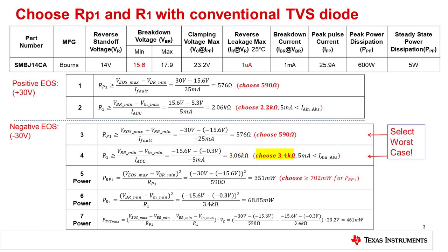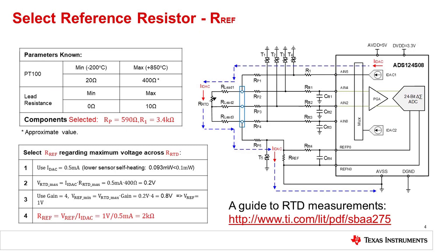Also, in any case where a standard resistor value is not found, we always round up for the most robust protection. In steps 5, 6, and 7, the worst case power dissipation of the resistors and TVS diode is calculated. The power dissipation for RP1 is 351 mW. A typical rule of thumb is to choose a power rating of at least twice the continuous power dissipation. In this case, the power rating should be at least 702 mW. The power dissipation of R1 is relatively low at 68 mW, so a standard resistor will work well. The TVS diode dissipates a relatively high power of 468 mW, but the diode is rated for a steady state power dissipation of 5 watts, so this isn't an issue.